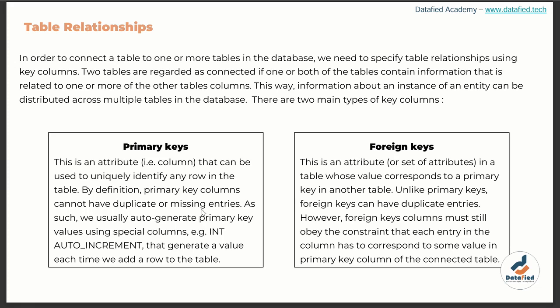At minimum, there must be one column that is common to both tables. By connecting tables this way, information about an instance of an entity can be distributed across multiple tables in the database. There are two main types of key columns: primary keys and foreign keys. A primary key is an attribute or column that can be used to uniquely identify any row in the table.